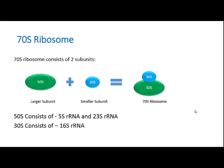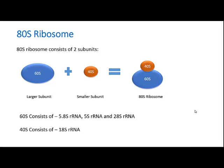The 50S larger subunit of the 70S ribosome consists of 5S rRNA and 23S rRNA, whereas the 30S smaller subunit consists only of 16S rRNA.